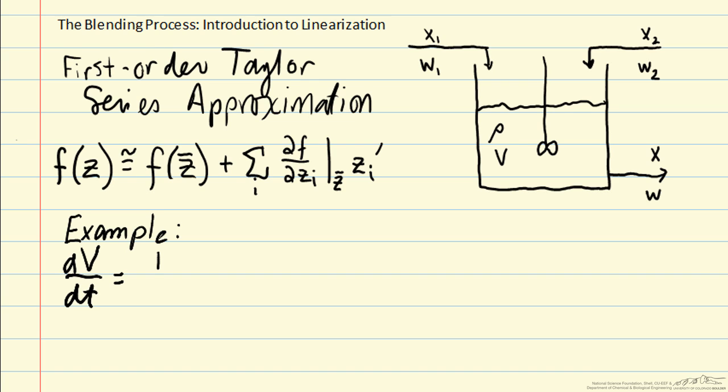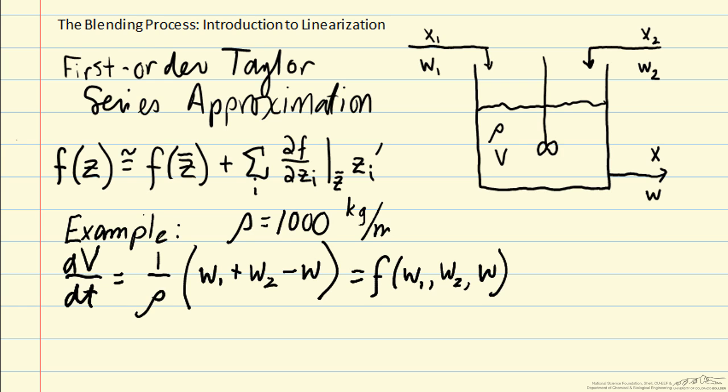And that was 1 over the density times w1 plus w2, the flow rates in, minus the flow rate out. Those are our mass flow rates. We're going to refer to the right-hand side of the equation as function f, which depends on w1, w2, and w. And rho is a constant, we've been using the value for water, 1000 kilograms per meter cubed.